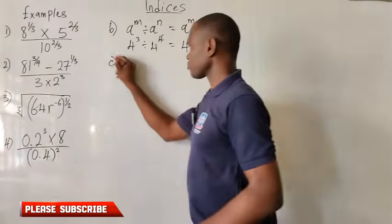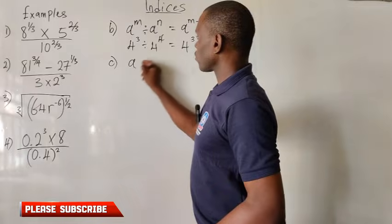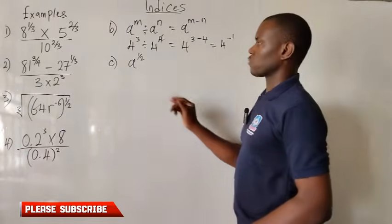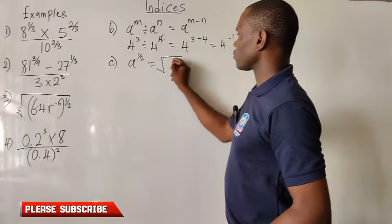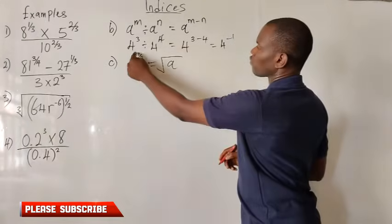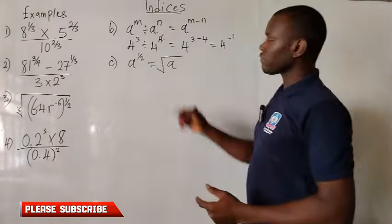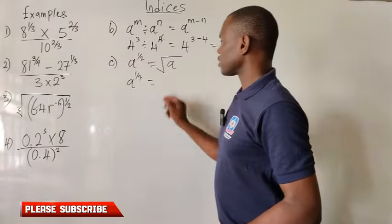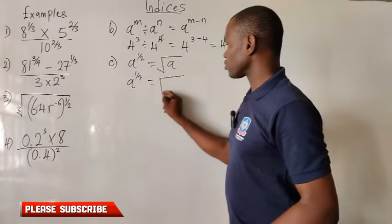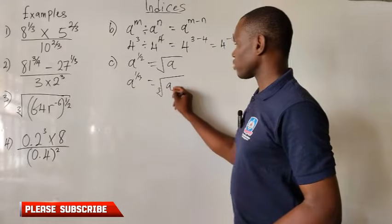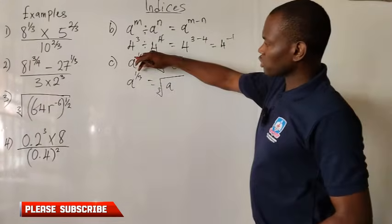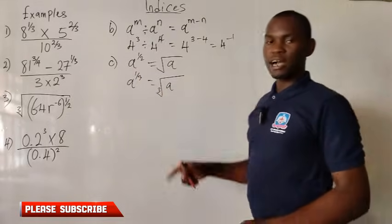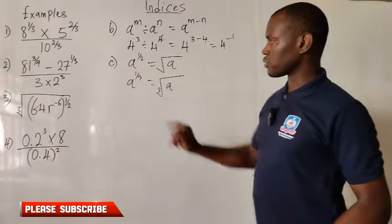Now let's consider the third law. I have a raised to the power of 1 over 2 — this is a square root, so I will simply say this is the square root of a. Each time you have 1 over 2 as your power, it is a square root. But if the denominator is 3, then you will have a cube root of a. Whatever number you have as your denominator comes as the root of the given base.